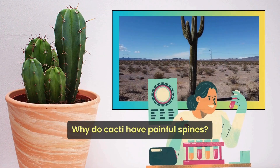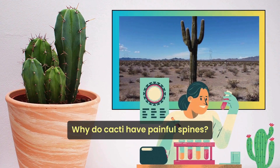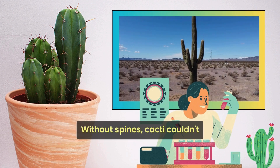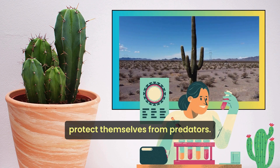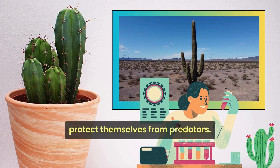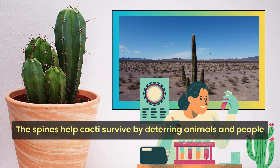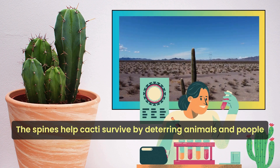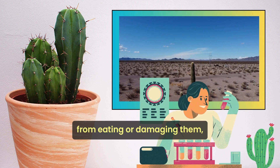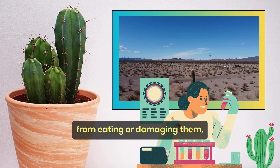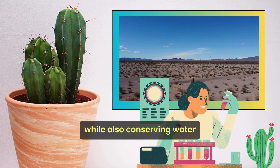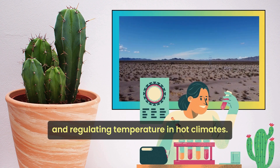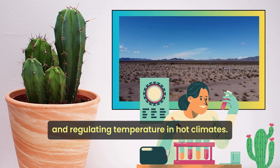Why do cacti have painful spines? Without spines, cacti couldn't protect themselves from predators. The spines help cacti survive by deterring animals and people from eating or damaging them, while also conserving water and regulating temperature in hot climates.